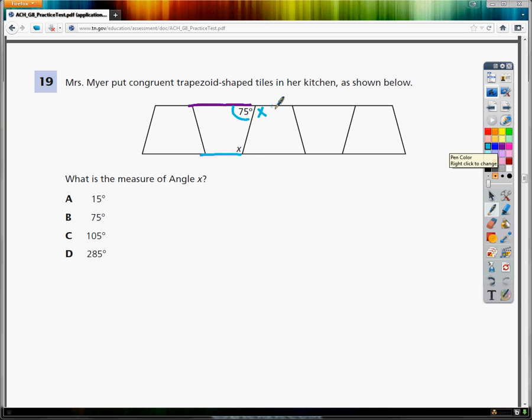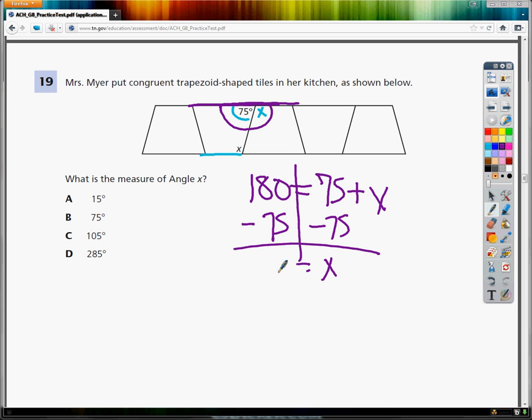Now that I think of that, this shape that connects them together is a straight line. So I could tell that these two angles together make a straight line, which is equal to 180 degrees. So 75 plus x equals 180. Therefore, x equals 105.